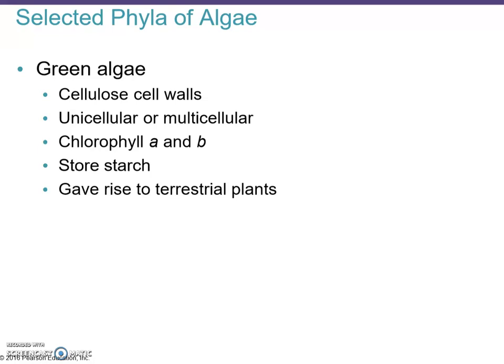Continuing our discussion of algae with the green algae — probably the ones you picture when you think about algae. These are the most plant-like ones; they have cellulose cell walls and can be unicellular, like Chlorella, or multicellular. They contain the typical chlorophyll a and b.